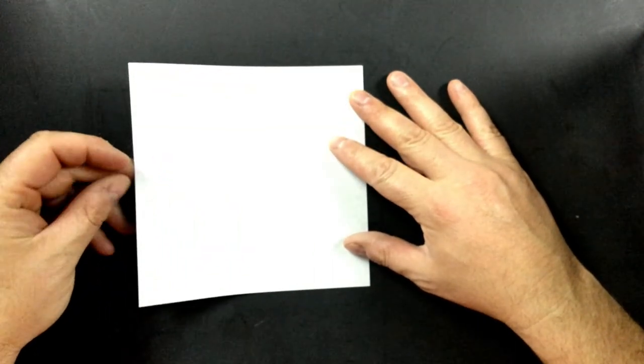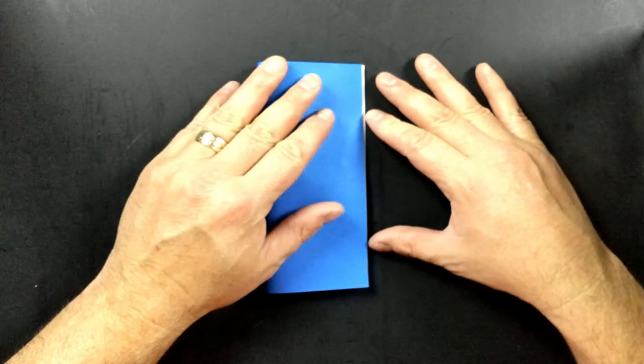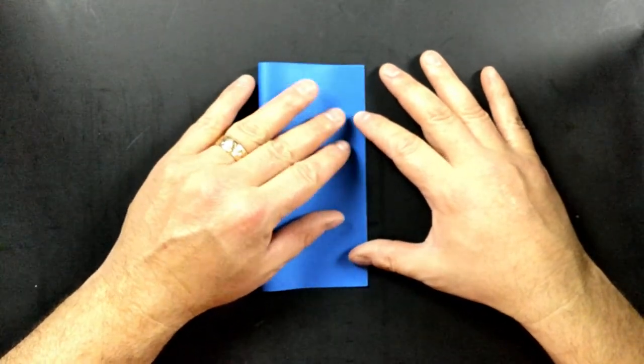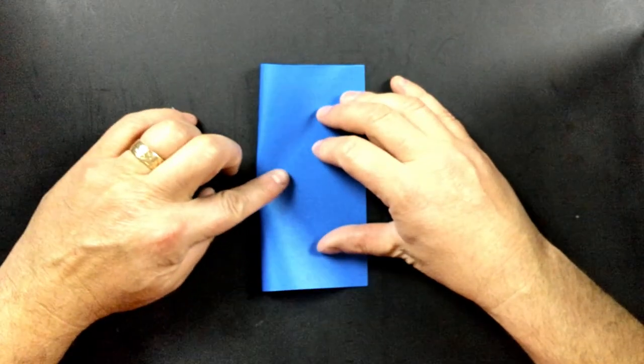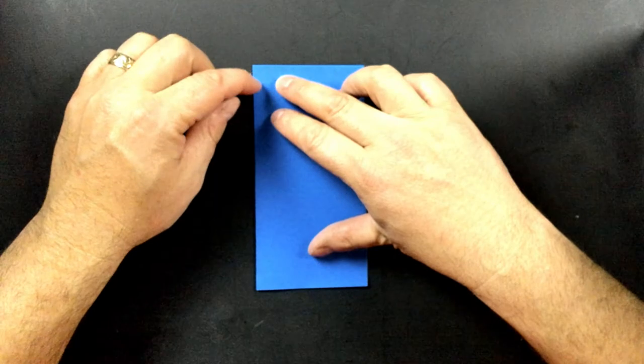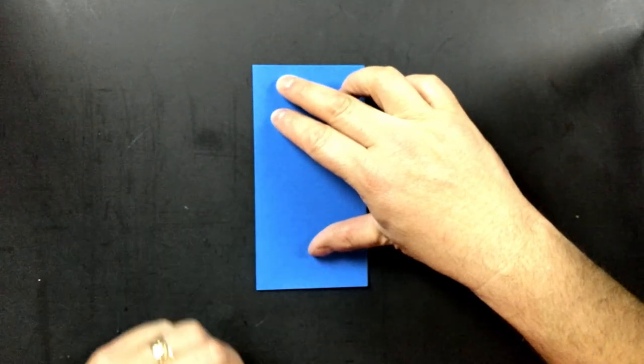We're going to fold it in half from the left going to the right. So we roll it, match the edge up, hold, then we fold, and then use a fingernail or a thumbnail to crease the edge.